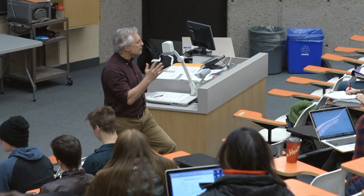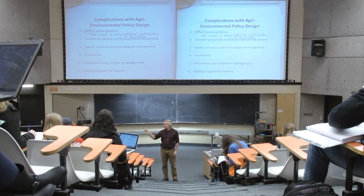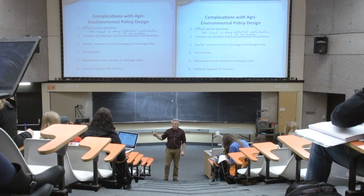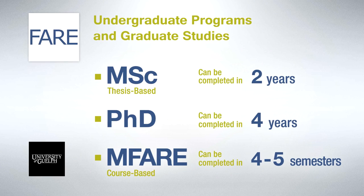We have exceptional teachers and our track record for receiving teaching awards and recognition demonstrates that. Our thesis-based Master of Science program can be completed in two years, while our PhD program can be completed in four years. Our course-based masters in food agricultural and resource economics can be completed in four or five semesters.